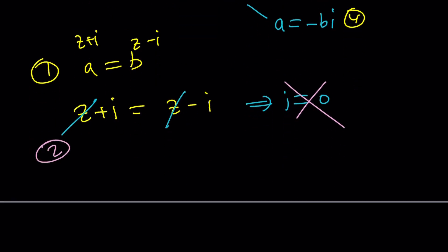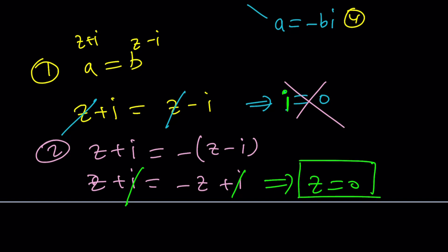Second case was A equals negative B. Z plus I equals negative of Z minus I. Z plus I is negative Z plus I. This time, it's better because I cancels out and we end up with Z equals zero. Is that acceptable? Absolutely. Z can be zero, right?